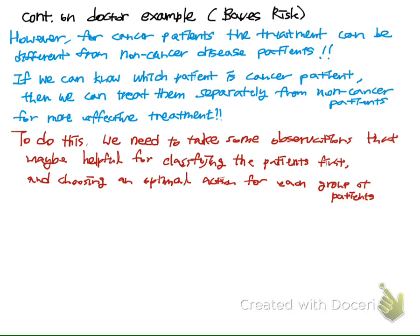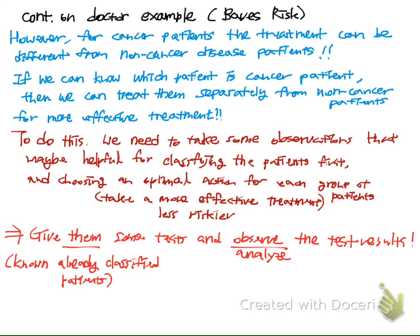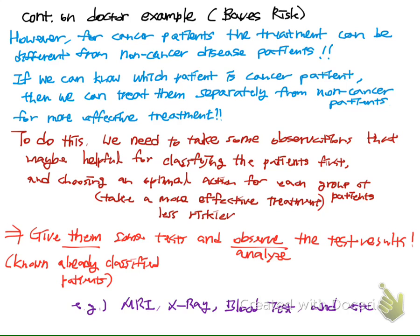In order to do this, we need to take some observations that may be helpful for classifying the patients first. Then we choose an optimal action for each group of patients that may be less risky as an effective treatment. As we did before for the Bayesian classifier, we can take some observations — give them some tests, observe the test results, and analyze the results. The test is given for already-classified known patients, and then we analyze the results. Possible candidates for the test would be MRI, X-ray, blood test, and so on. Here, we choose to take the blood test as an observation.